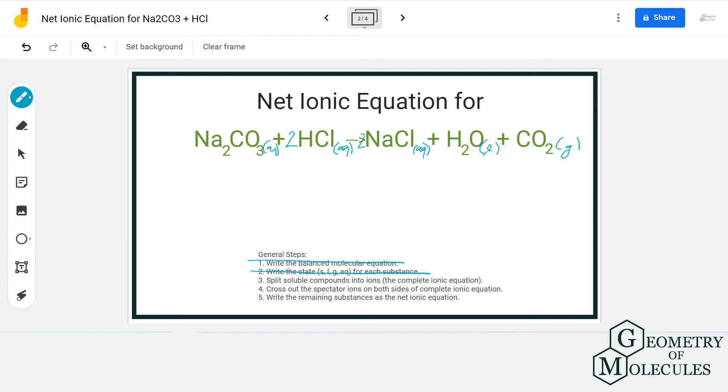Once you've done that, you can split the soluble compounds into ions. This helps us know what compounds can be split into ions. Na₂CO₃ will be split into Na⁺ ions with a plus charge and CO₃²⁻ with a minus two charge. Similarly, HCl becomes H⁺ and Cl⁻. NaCl becomes Na⁺ and Cl⁻. H₂O will not split because it is in liquid state, and it's the same case for CO₂—it will not split either.